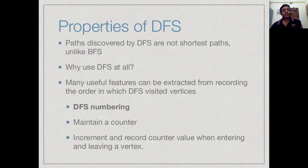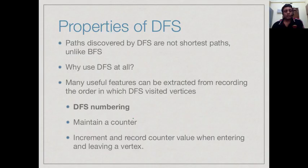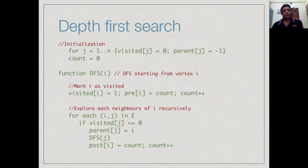Actually, this recursive way of exploring gives us a lot of information. Many useful features about the graph can be extracted by recording the order in which DFS visits vertices. For this, we augment DFS with something called numbering. We maintain a counter which we increment every time we enter a vertex when DFS starts on a vertex and when it leaves, associating with each vertex two values.